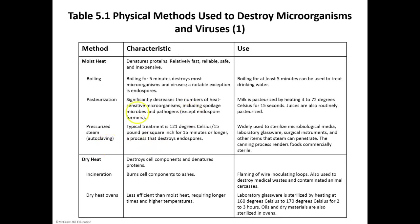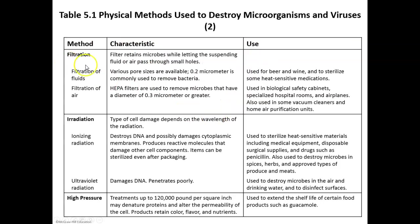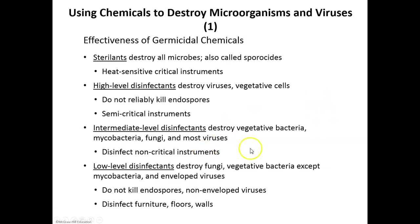This table goes through the different types of physical methods — moist heat, dry heat — with the characteristics of each and their uses. It also covers filtration, irradiation, and high pressure processing. We'll stop here and get into the chemical methods of destroying microbes in the next video.